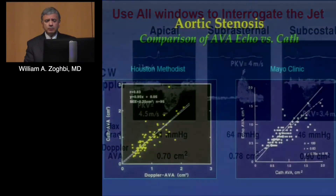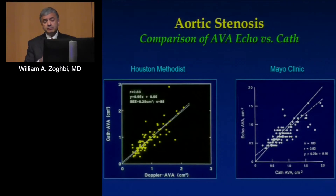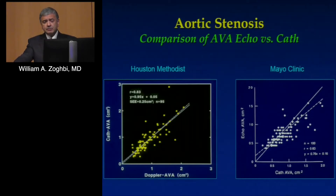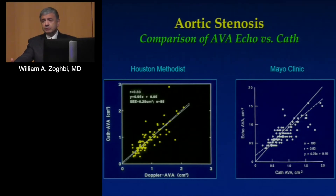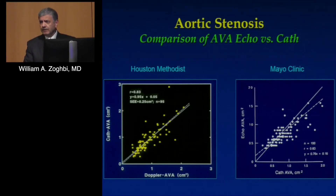This is a historical comparison — validation data from the early 1980s at Houston Methodist versus the Mayo Clinic — and they are identical. There's more scatter in milder aortic stenosis compared to tighter stenosis, and that's not a Doppler issue — it's because the Gorlin equation falls apart when the mean gradient is very small and you have low-flow conditions.